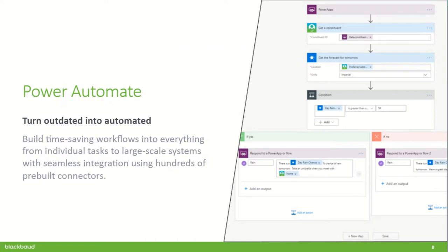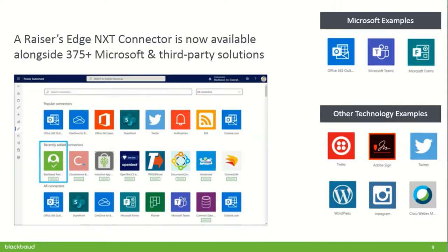Power Automate is a workflow automation tool built by Microsoft, meant for people who don't have a lot of coding experience. If you're familiar with Raiser's Edge 7, it's similar to macros — doing a lot of things in sequence — but even better because you can connect to systems outside of Raiser's Edge much more easily. With this new connector, you can connect to Office 365, Teams, Twitter, and many other places without a lot of coding work.